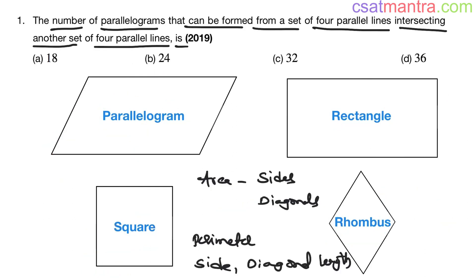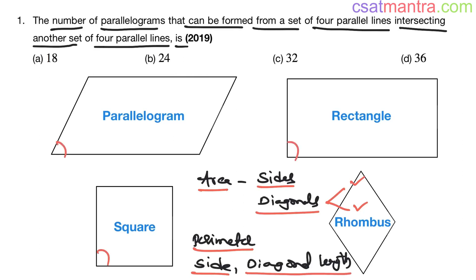This is a question from the permutation and combination chapter — I don't want to go into the geometry part here. In the geometry chapter we have seen the area of these parallelograms: when side lengths are given, when diagonal lengths are given, diagonal properties, perimeter, angle between adjacent sides, and relations between opposite angles. Kindly go through those properties — they are very important and will come in handy in almost all exams.